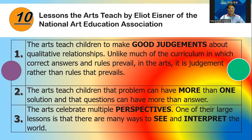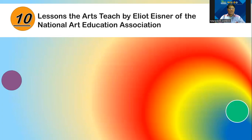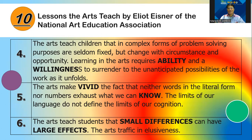Teaching students that problems can have more than one solution is very valuable. Lesson three: the arts celebrate multiple perspectives — one of their large lessons is that there are many ways to see and interpret the world. Lesson four: the arts teach children that in complex forms of problem solving, purposes are seldom fixed but change with circumstance and opportunity. Learning in the arts requires the ability and willingness to surrender to the anticipated possibilities of the work as it unfolds.